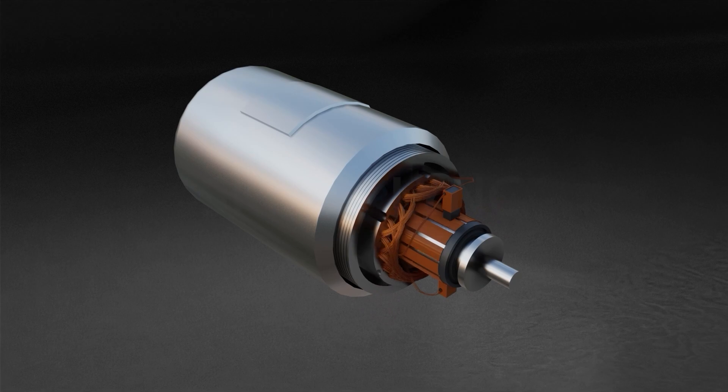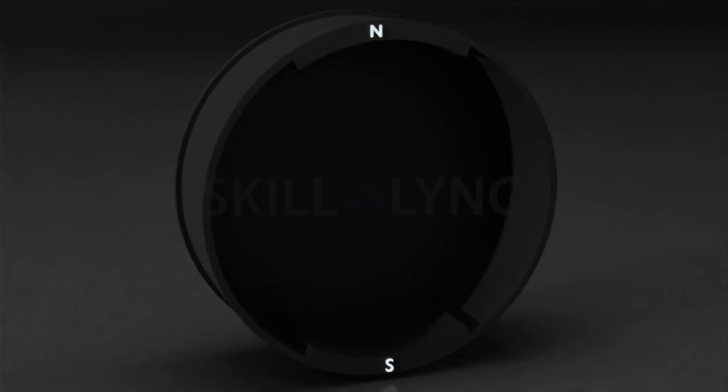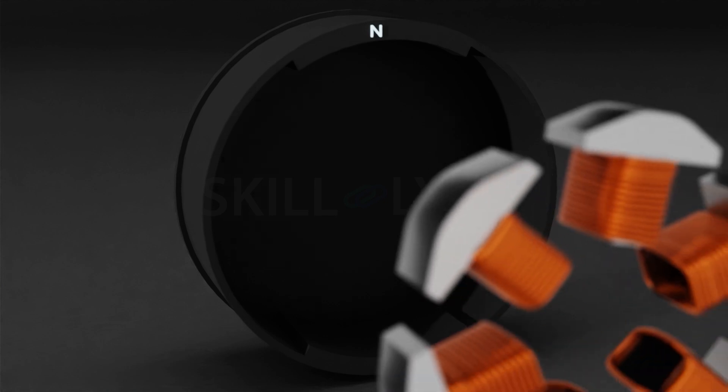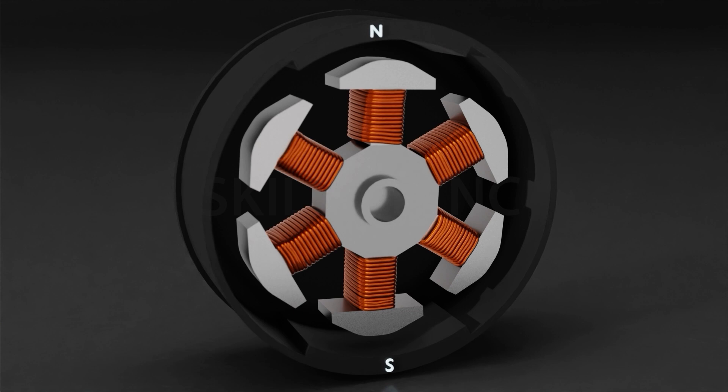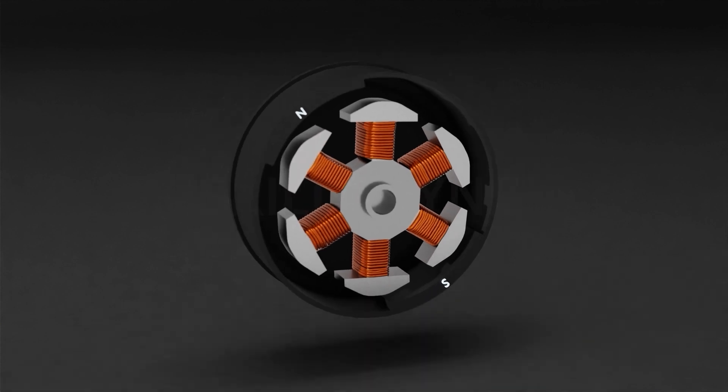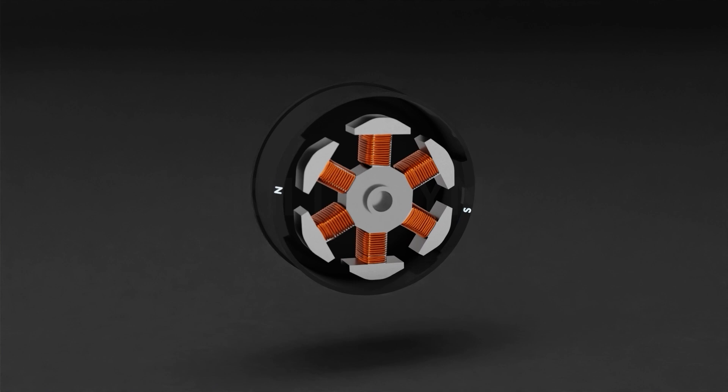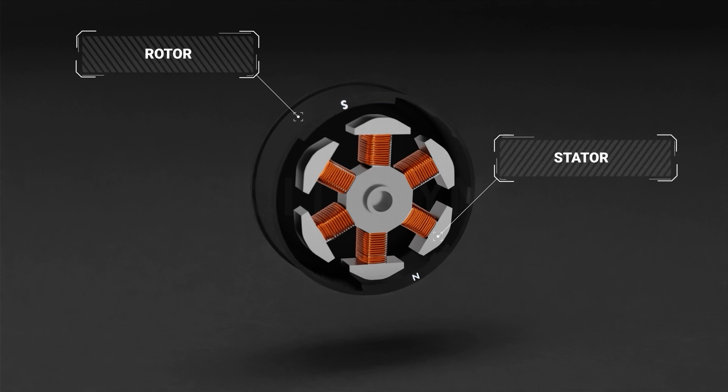This is why many car manufacturers prefer the brushless DC motor, commonly known as the BLDC motor, over the brushed DC motor. In the BLDC motor, the brush and commutator get replaced by an electronic system, which reduces the number of mechanical parts. This leaves us with just the rotor and stator.